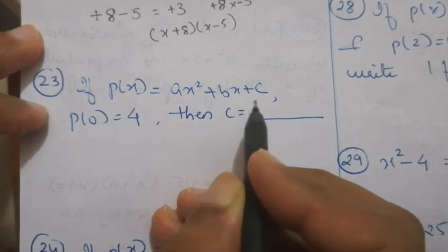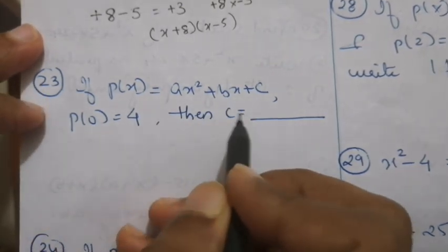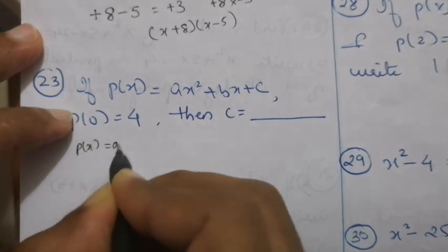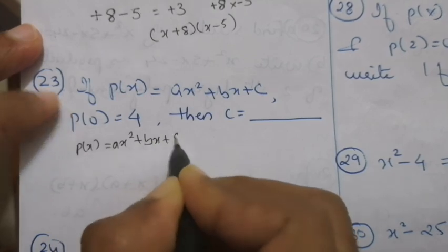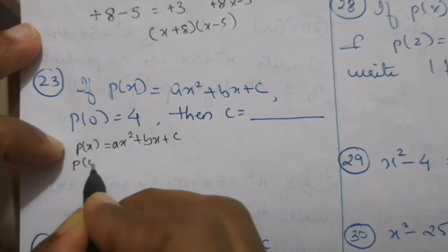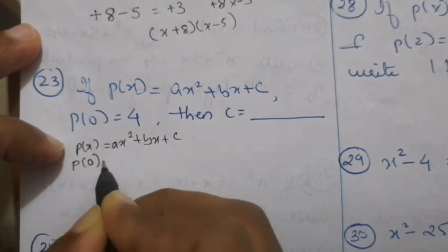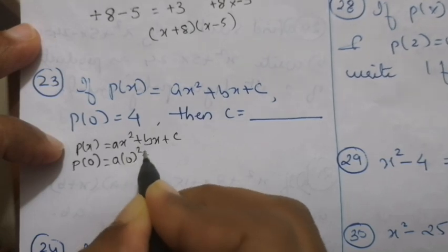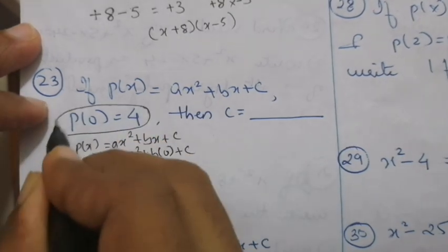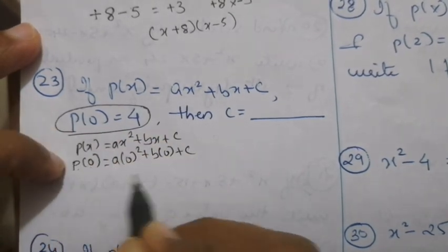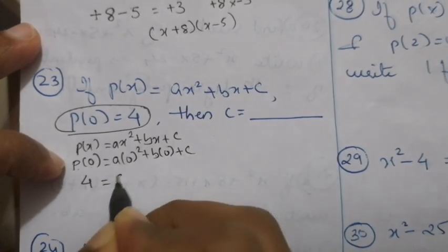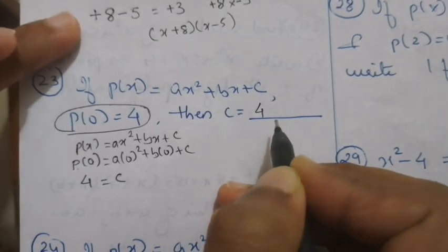If p of x equals ax squared plus bx plus c and p of 0 equals 4, then c equals what? When we substitute x equals 0: a times 0 squared plus b times 0 plus c equals 4. The first two terms become 0, therefore c equals 4.